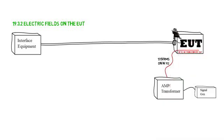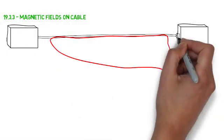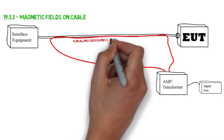For magnetic fields on the cable, run a high current wire along each bundle of the EUT to be tested. This wire should be within 5 millimeters of the bundle. Apply the forward current specified per your category.